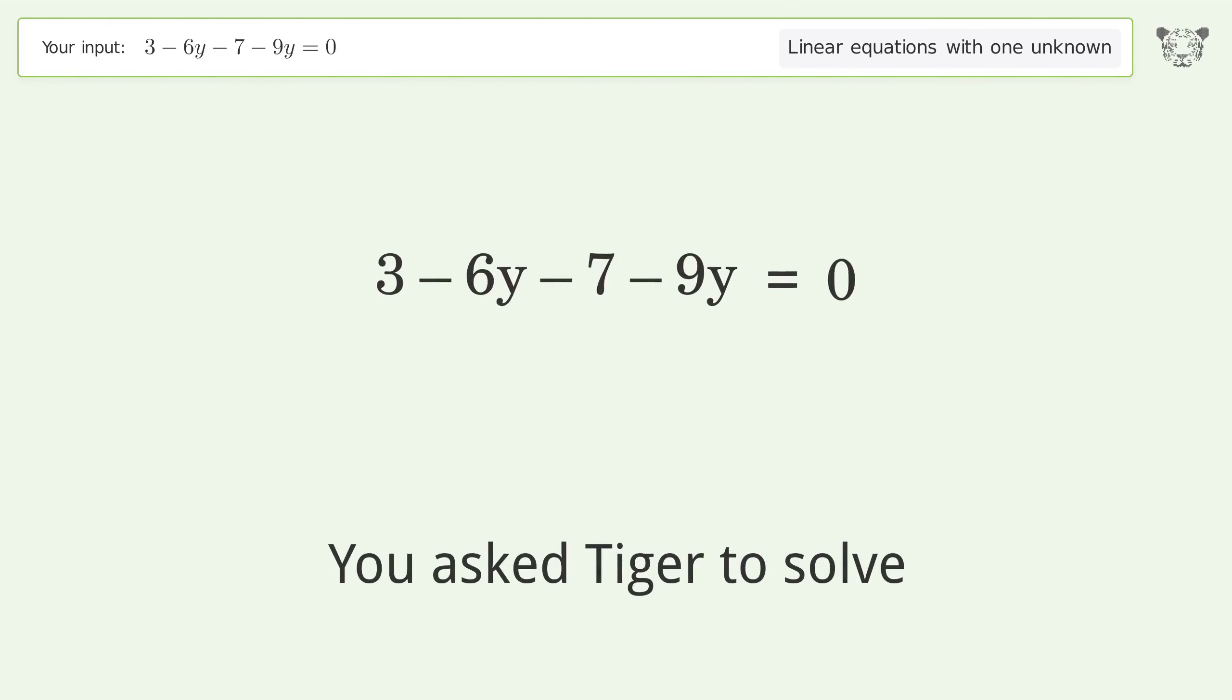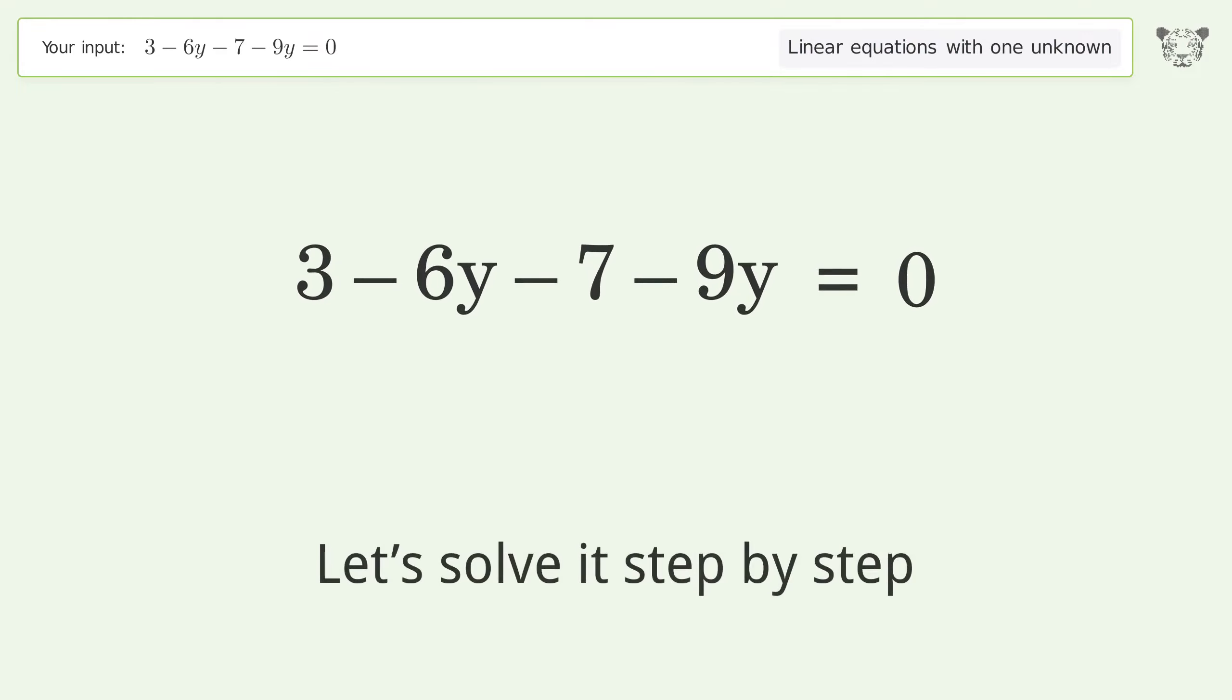You asked Tiger to solve this problem, which deals with linear equations with one unknown. The final result is y equals negative 4 over 15. Let's solve it step by step.